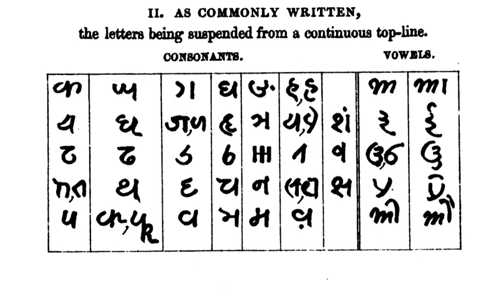Kaithi uses stylistic variants of Devanagari digits. It also uses common Indic number signs for fractions and unit marks. Kaithi script was added to the Unicode standard in October 2009 with the release of version 5.2. The Unicode block for Kaithi is U+11080 to U+110CF.